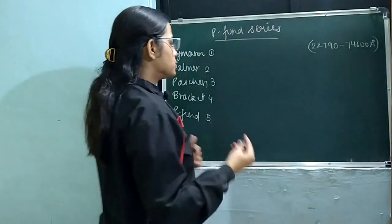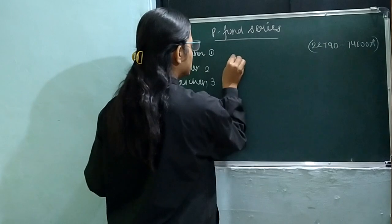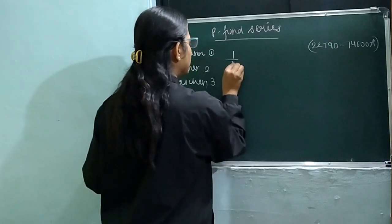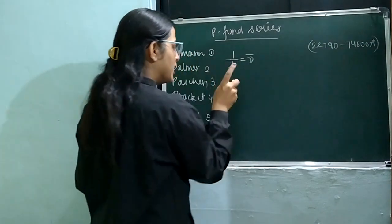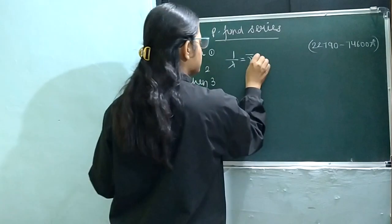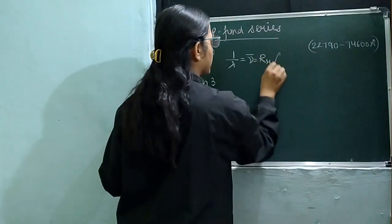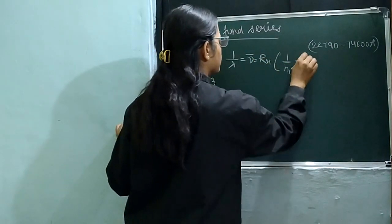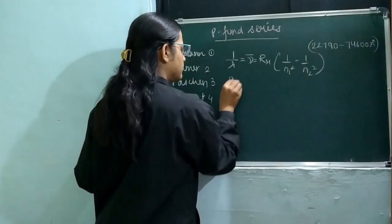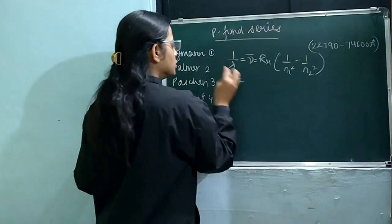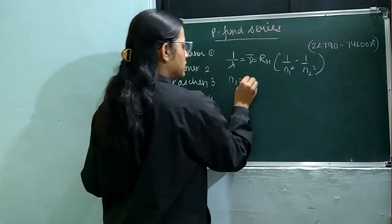As usual, the same formula you will use. That is 1 by lambda, which is also equivalent to nu-bar, called the wave number. That is equivalent to RH in bracket 1 by N1 squared minus 1 by N2 squared. The value of N1, since this is the Pfund series, is 5.